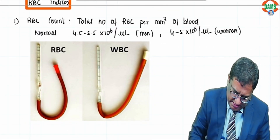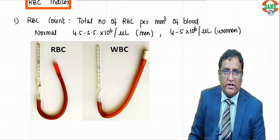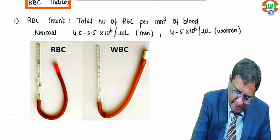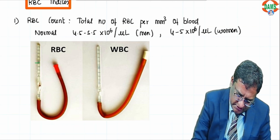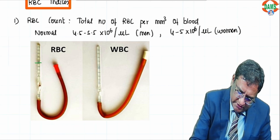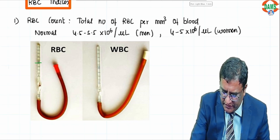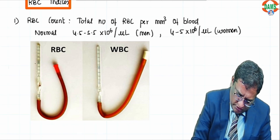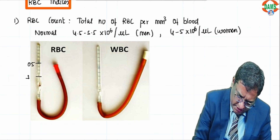First is RBC count. For that, we need an RBC pipette. The RBC pipette has a stem — this part is called the stem of the pipette. There are markings in the stem: a marking of 0.5 and a marking of 1.